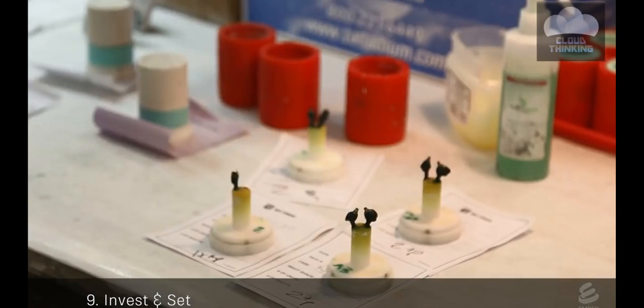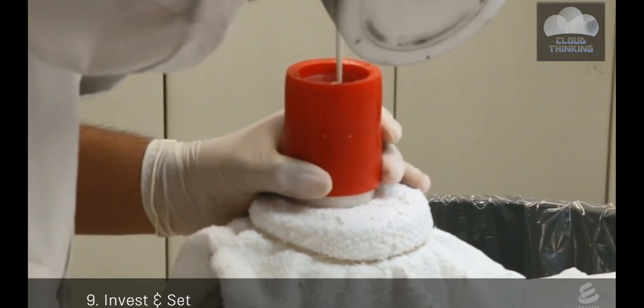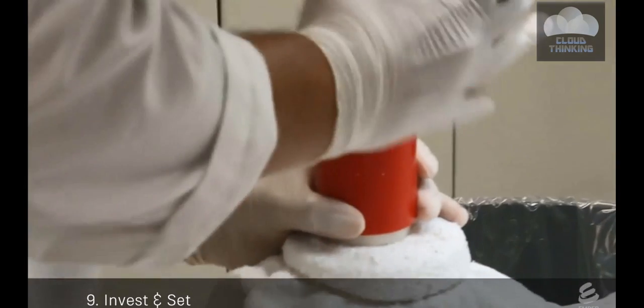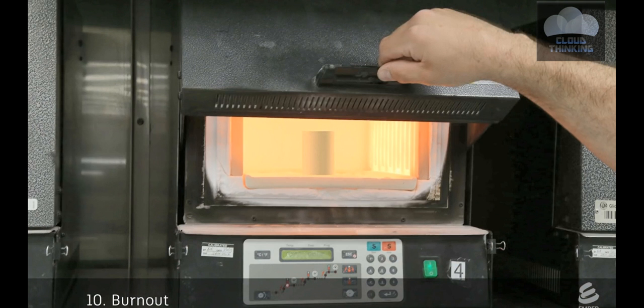The sprued crowns are put into a mold and a technician mixes up the investment material and pours it around the crowns. When the investment is completely set, it's put into an oven until the heat completely vaporizes the wax and 3D printed crown, leaving a crown-shaped void inside the investment.